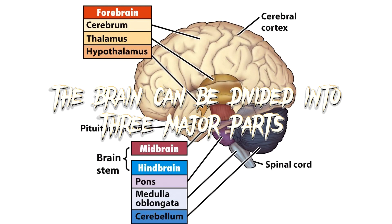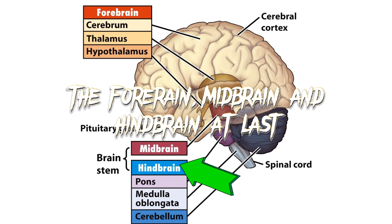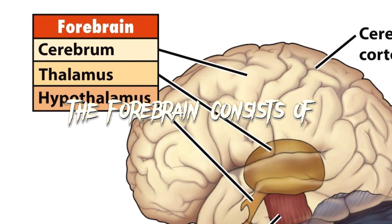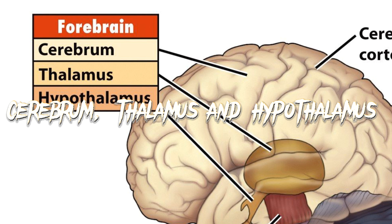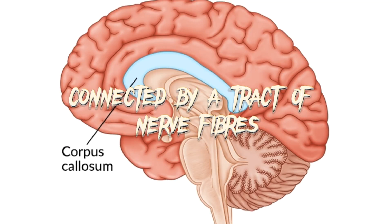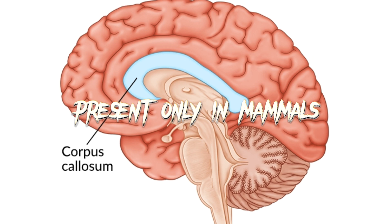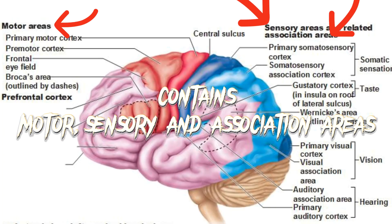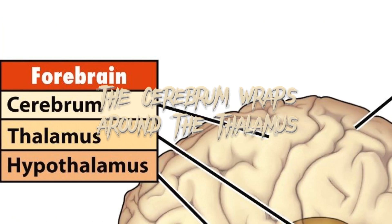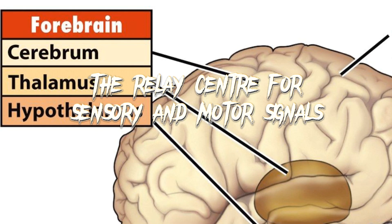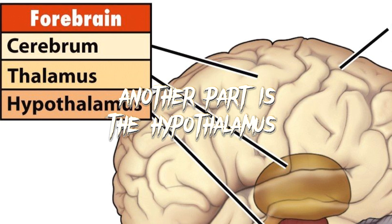The brain can be divided into three major parts: the forebrain, midbrain, and hindbrain. The forebrain consists of the cerebrum, thalamus, and hypothalamus. The cerebrum consists of two cerebral hemispheres connected by a tract of nerve fibers called the corpus callosum, present only in mammals. The cerebral cortex covers the cerebral hemispheres and contains motor, sensory, and association areas. The cerebrum wraps around the thalamus, which is the relay center for sensory and motor signals.